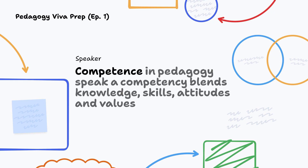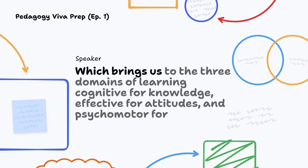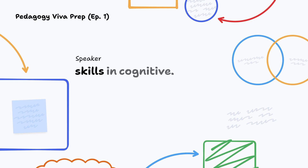Now, competence. In pedagogy speak, a competency blends knowledge, skills, attitudes and values to perform effectively and consistently in real-world situations. Which brings us to the three domains of learning: cognitive for knowledge, affective for attitudes and psychomotor for skills.